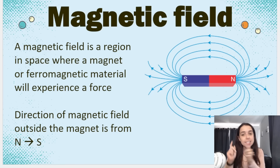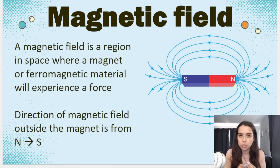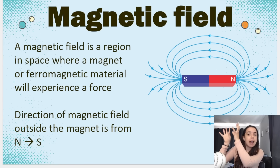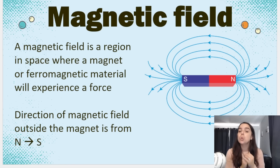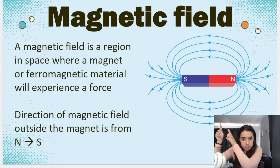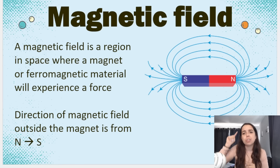Starting with magnetic fields — this is something you should have learned in grade 10. A magnetic field is a region in space in which a magnet or a ferromagnetic material, like iron, cobalt, or nickel, will experience a force. Above me you can see a magnet and its magnetic field lines. The direction of the magnetic field outside the magnet is from north to south. The field lines can never cross, and you need to know how to draw this.